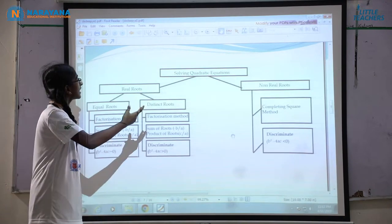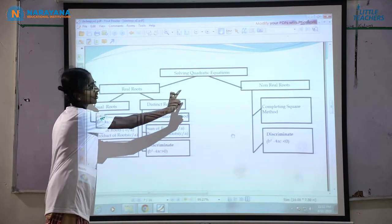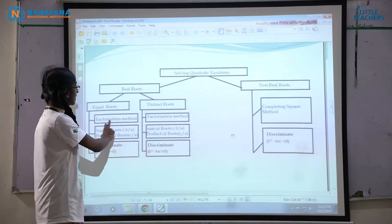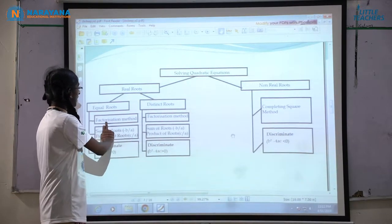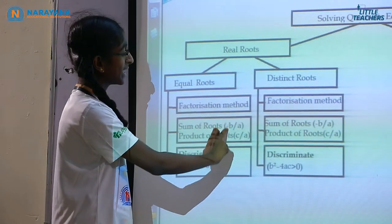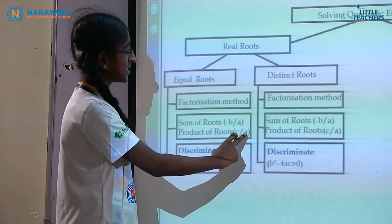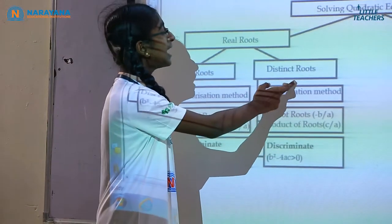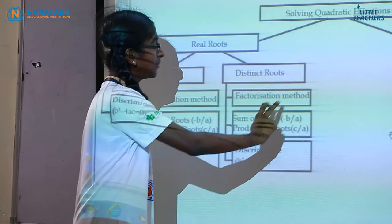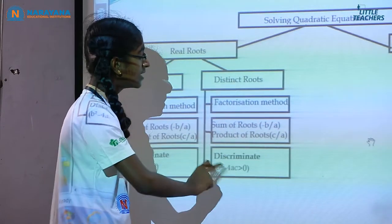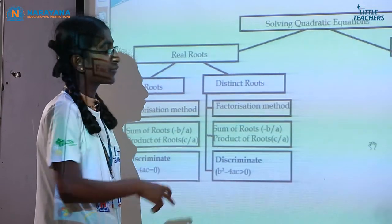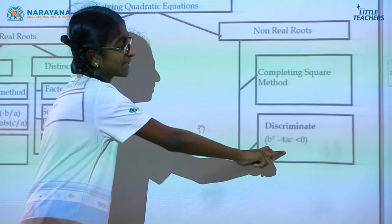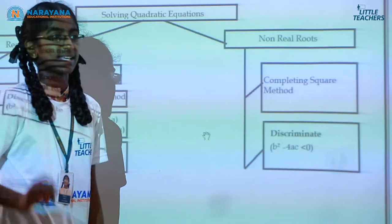Solving quadratic equations: there are two types — real roots and non-real roots. In real roots, there are equal roots and distinct roots. Equal roots can be found using factorization method, sum of roots (−b/a) and product of roots (c/a), and discriminant b² − 4ac = 0. For distinct roots: factorization method, sum and product of roots, and discriminant b² − 4ac > 0. For non-real roots: completing the square method, and discriminant b² − 4ac < 0.